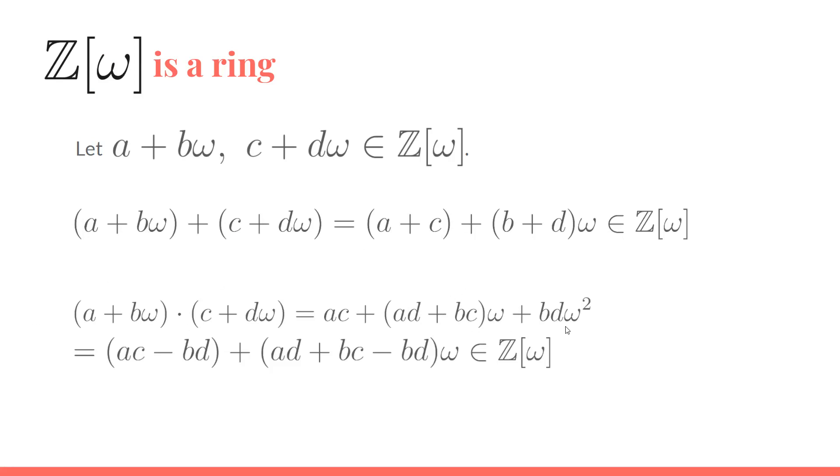And then if we do multiplication, as long as we rewrite ω² in terms of -1 - ω, we can end up with this here where each of these parentheses is an integer. So we stay inside the Eisenstein integers and we are good to go with it being a ring.